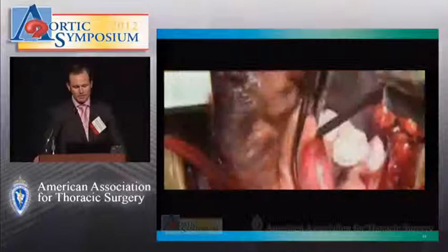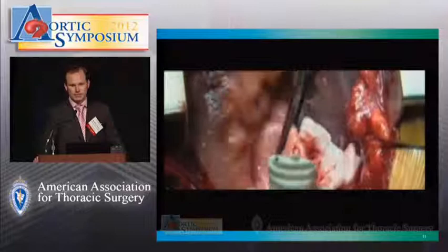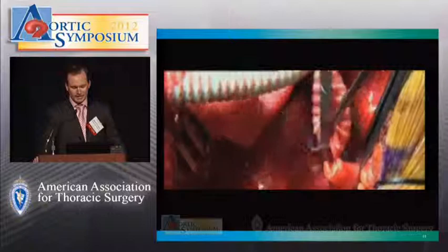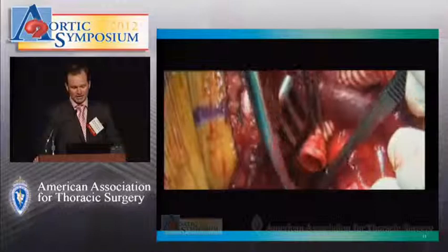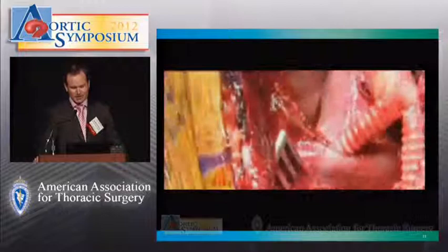A short video illustrates this procedure: tangential clamping of the ascending aorta, longitudinal incision, and end-to-side anastomosis between the proximal prosthesis and the native vessel. In the second step, transsection of the brachiocephalic trunk with an end-to-end anastomosis between the first limb of the graft and the trunk. It remains optional whether one or both limbs of the prosthesis are guided ventral to the innominate vein according to the individual anatomical situation. The second limb is then anastomosed to the left subclavian artery, and the left common carotid artery is reinserted into this branch.